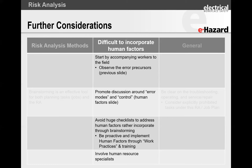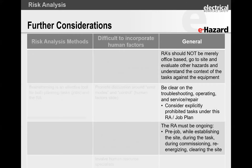Avoid huge checklists to address human factors — make it easy, that KISS principle. Walk with your workers. Take your electricians, supervisors, and safety officers out to site and promote discussion around what are the modes and what are the controls. Make it applicable to the actual working conditions. Involve human resources specialists. And your risk assessment should not merely be office-based — you need to go out, look at it, be confident with what you are doing, and be clear on what's your scope of work and what constitutes a change in scope.